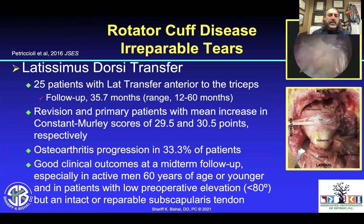What about a latissimus dorsi transfer? In 25 patients followed at 35.7 months (range 12 to 60), revision and primary patients showed a mean increase in constant scores from 29 to about 34.5 respectively. Osteoarthritis progression was seen in about a third. Good clinical outcomes were seen at midterm follow-up. In active men 60 years of age or younger with low preoperative elevation of less than 80 degrees, this was helpful, especially if they had a repairable or intact subscapularis.